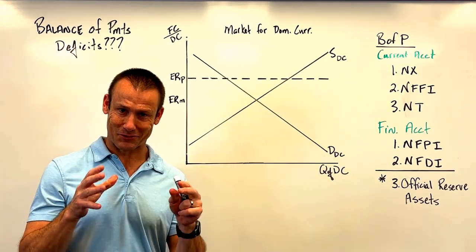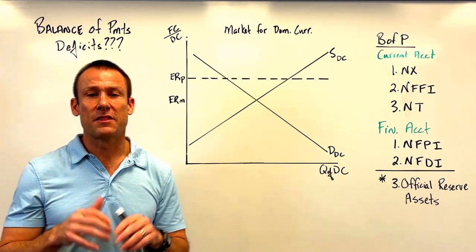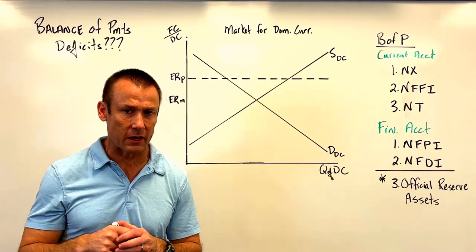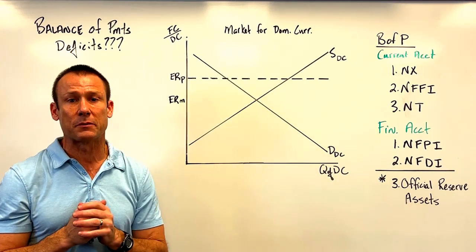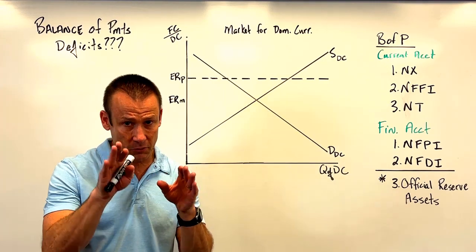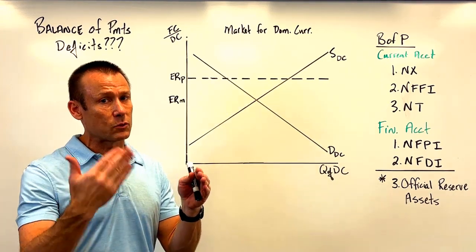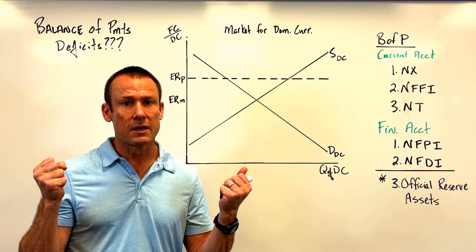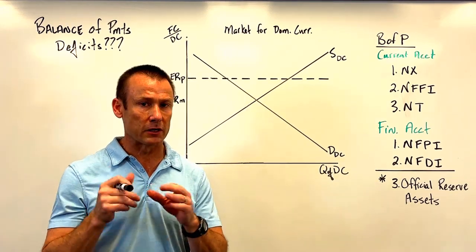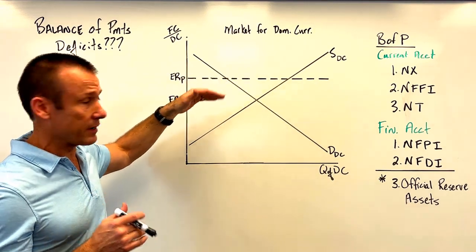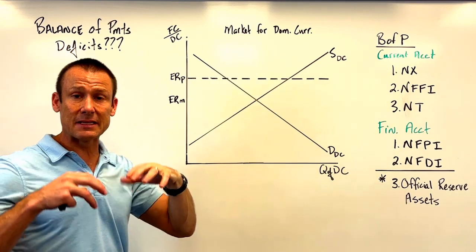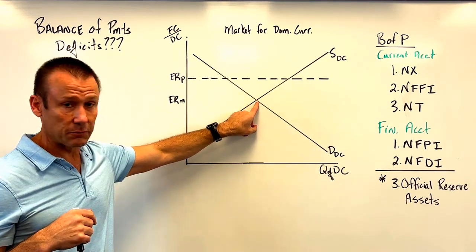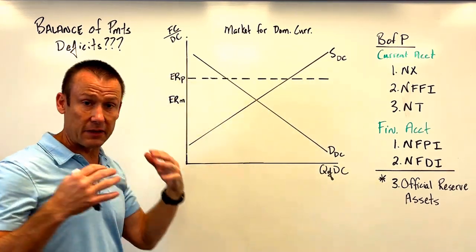Yes, they can run balance of payments deficits, but here comes an incredibly confusing line: at the end of the day, they really don't have a balance of payments deficit. Even for a country with a pegged currency, their balance of payments also always balances — but that's a complicated thing this video is going to try to explain. So yes, we can look at a country with a pegged currency and say they're running a balance of payments deficit, and I'm going to explain why we say that. I've got this country here — that 'P' right there is peg exchange rate.